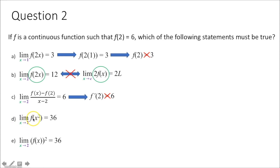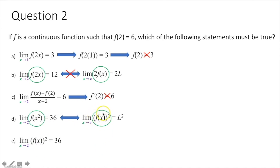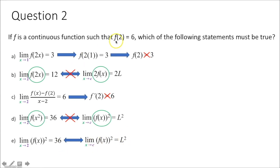Part d gives the limit as x approaches 2 of f of x squared equals 36. This tests the power rule for limits — but here you're squaring your x value, not your f of x value, so these are not compatible and cannot be true. Part e, however, does correctly apply the power rule: if the limit as x approaches 2 of f of x equals 6, then the limit as x approaches 2 of [f of x] squared equals 36, which is 6 squared. So part e must be true.